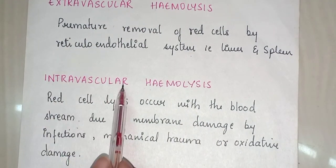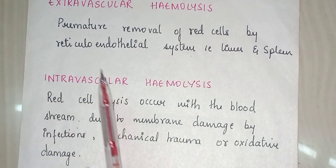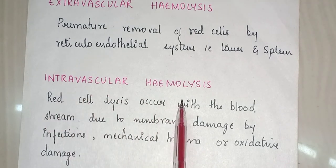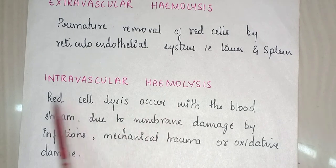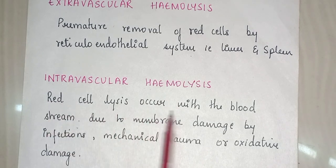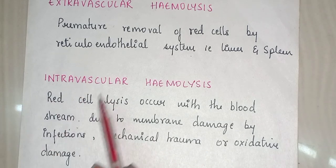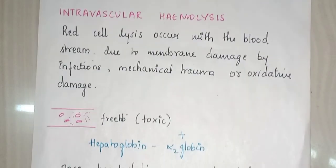In intravascular hemolysis, 'intra' means inside the vessel, so whenever there is destruction of RBCs inside the vessel it is called intravascular hemolysis. Red cell lysis occurs within the bloodstream. Due to membrane damage caused by infections, mechanical trauma, or oxidative damage, these causes might lead to destruction of RBCs inside the vessel.